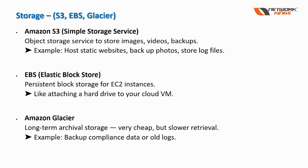EBS, or Elastic Block Storage, is persistent block storage for EC2 instances — just like a hard disk for your EC2 instance. It is extendable, and multiple EBS volumes can be connected to a single instance. Amazon Glacier is long-term archival storage at very low cost. You can retrieve data when required. If you want to store data for a longer period — one, two, five, or ten years — at very low cost, you can use Glacier.